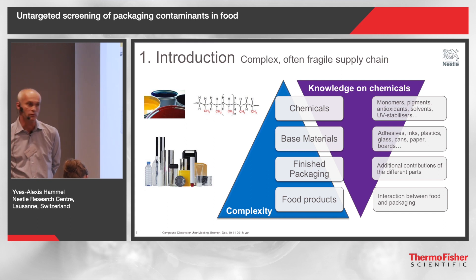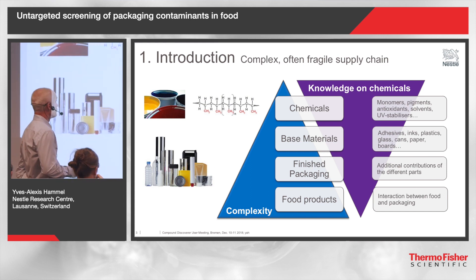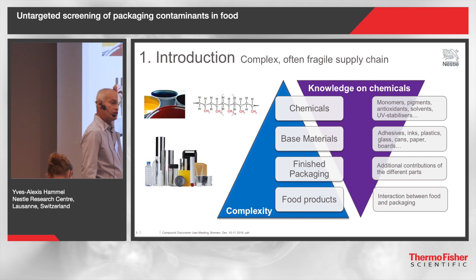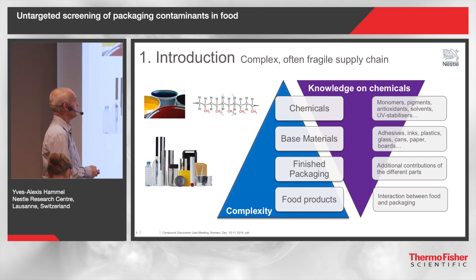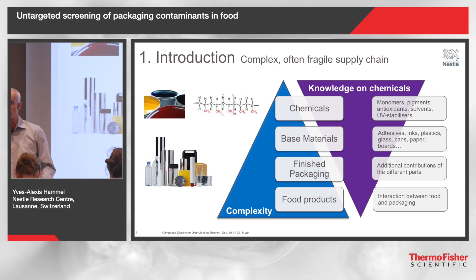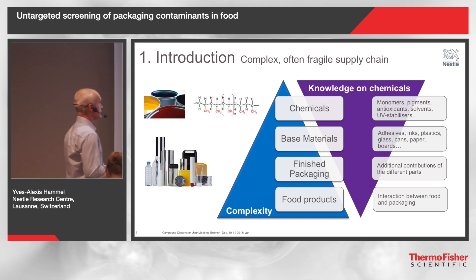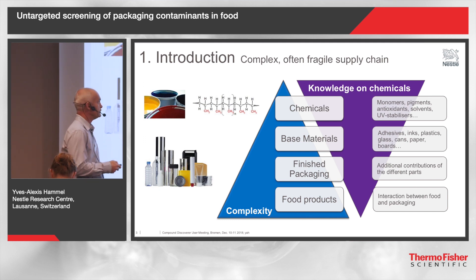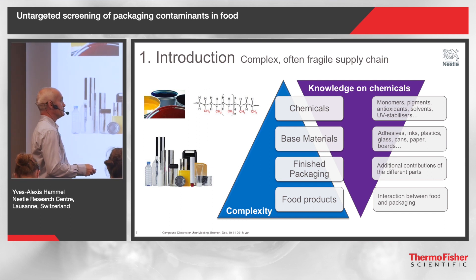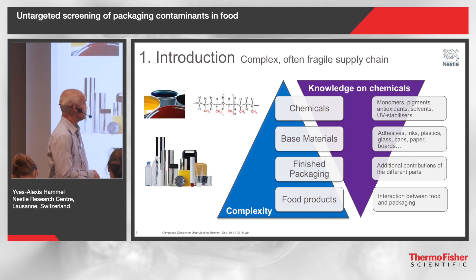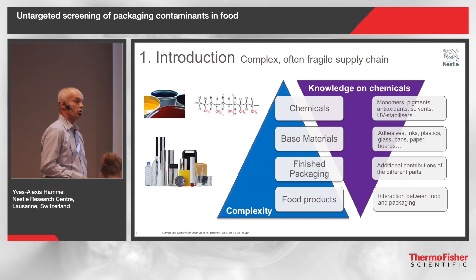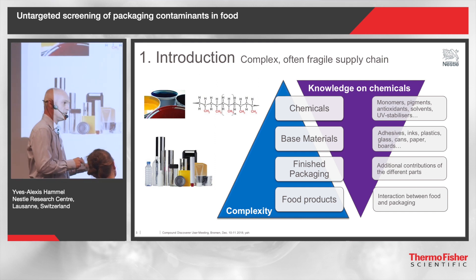What is a supply chain in our context? We have different people and different steps in the supply chain. We start with the chemistry — monomers, antioxidants, pigments — where knowledge is strong. But going down the chain, complexity increases and knowledge decreases. At the end, for finished products, we lose a lot of knowledge. And when food products interact with the package, it's really difficult to know about the interaction between the chemistry and the food.